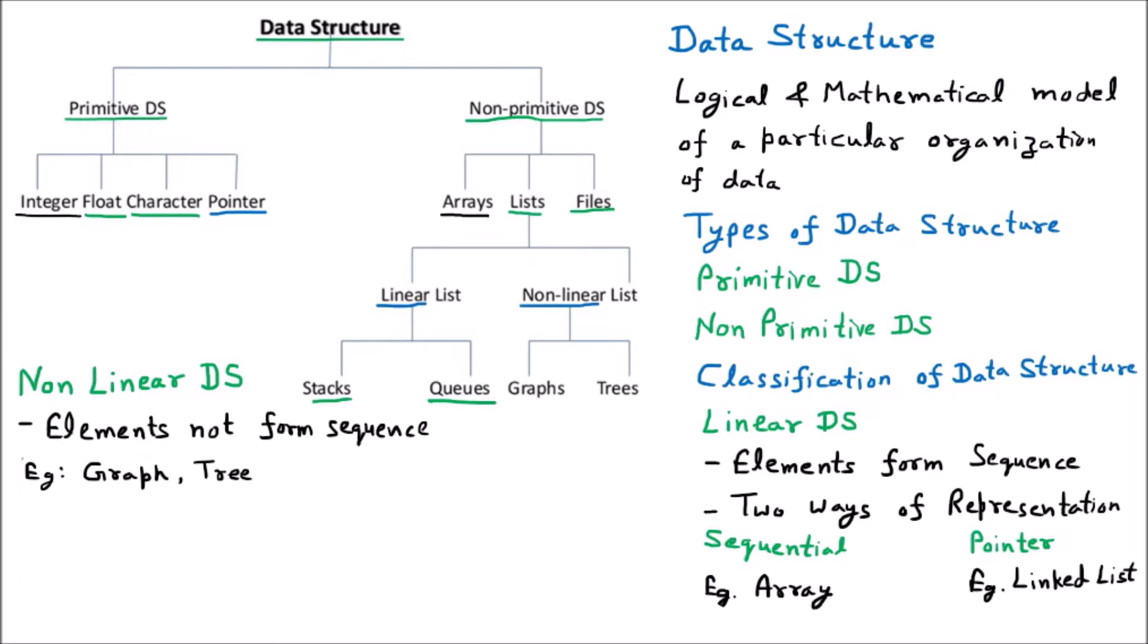If I talk about the first type which is the graph, now graph is the interconnection of multiple nodes into any of the other way. Let us suppose that this is some element assuming 11. Now it is connected with some other element like 10 or maybe it is connected with some other element 15.